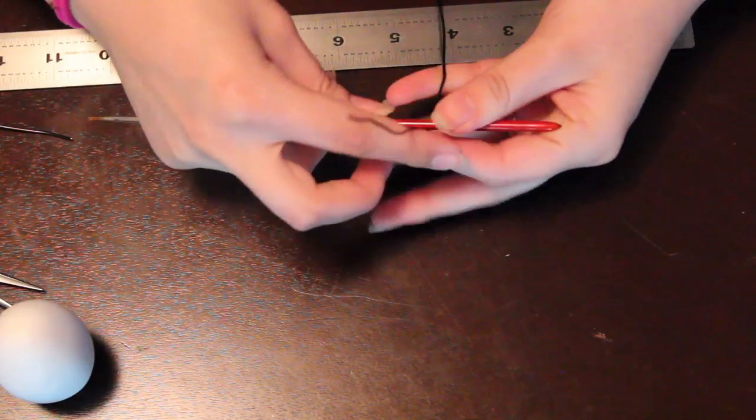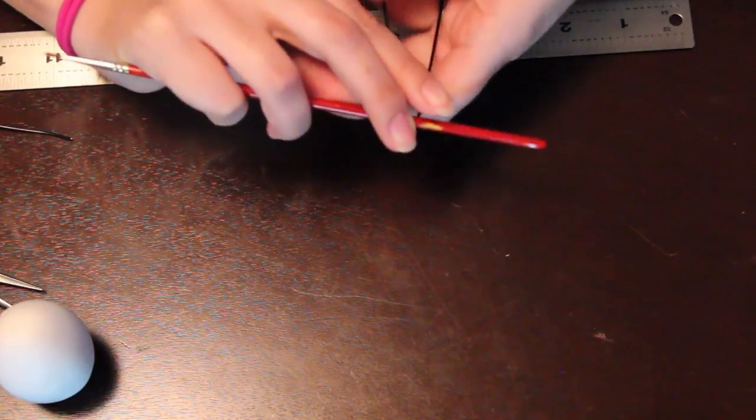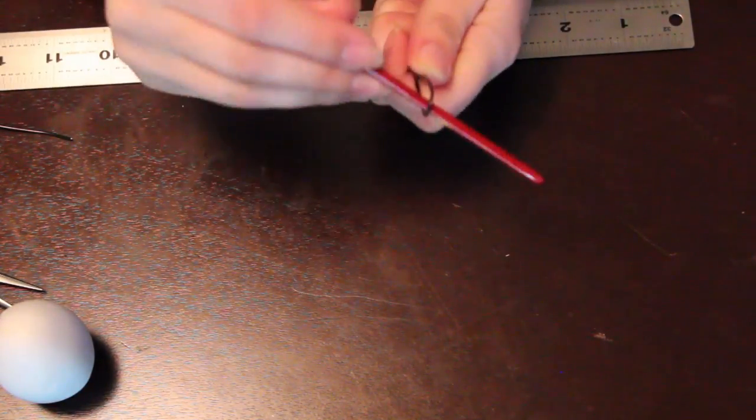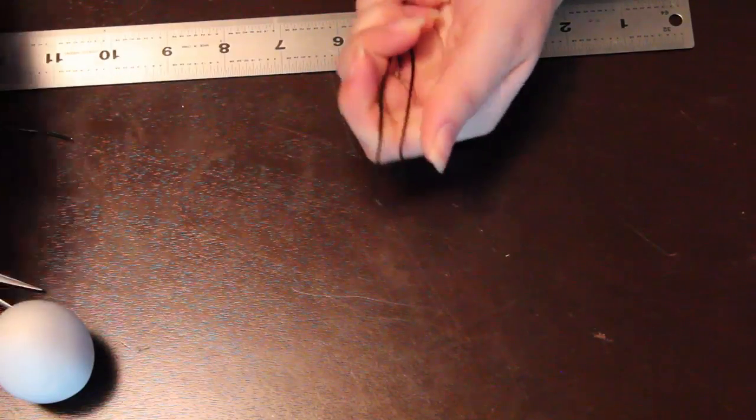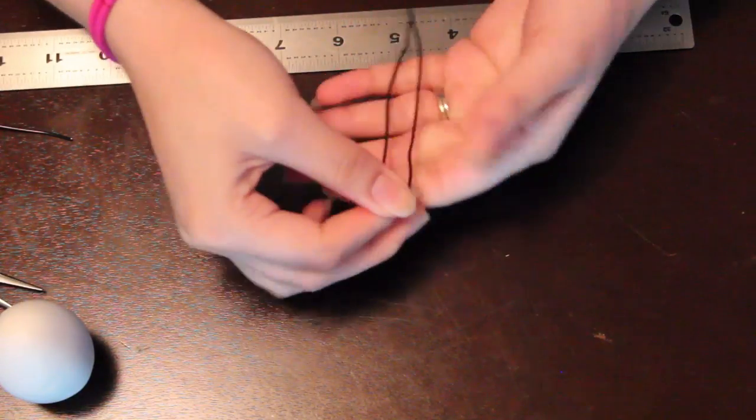So find the middle of the wire and bend it. You can use a paintbrush for this or even a pen. Just bend it so it has a nice round shape in the center. So it should look something like this.